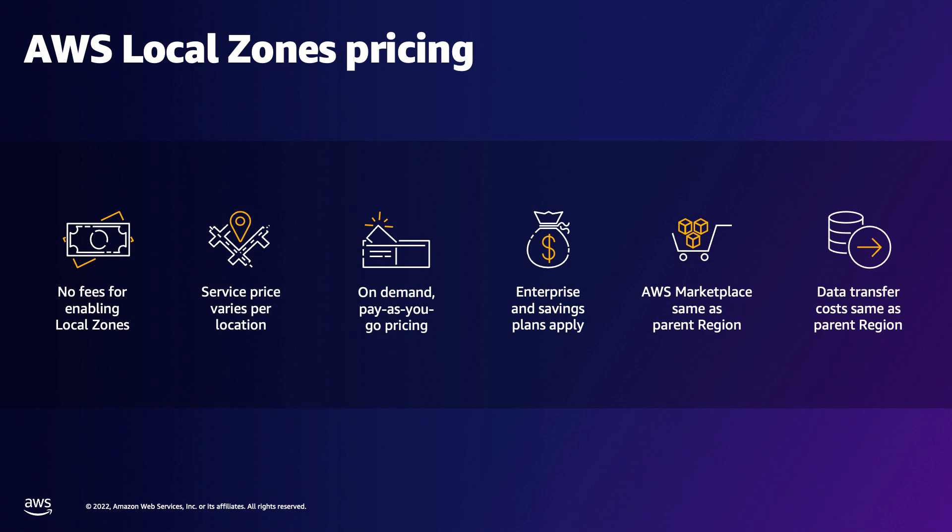With EC2 instances available on demand, customers can use pay-as-you-go pricing or purchase savings plans for Local Zones. Instances and local resources in Local Zones have their own pricing, and prices vary by metro. Customers can use the pricing calculator or the pricing section of respective services to determine overall pricing. Data transfer is priced for Local Zones as if they are one of the availability zones in a region — for example, sending traffic from EC2 in a Local Zone to S3 in the parent region is free of cost.